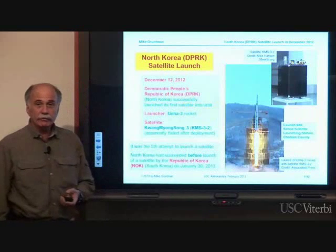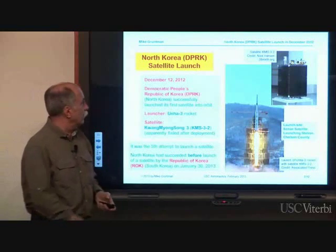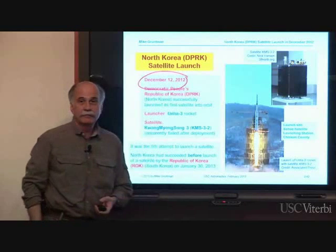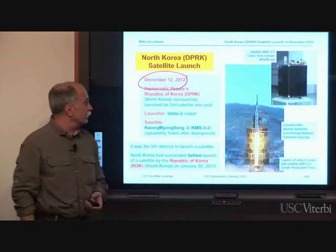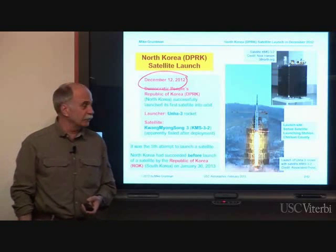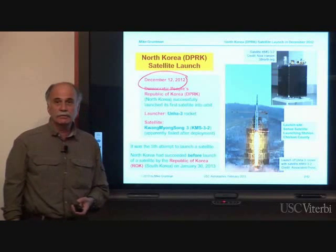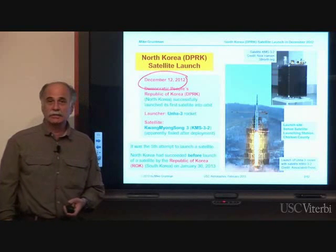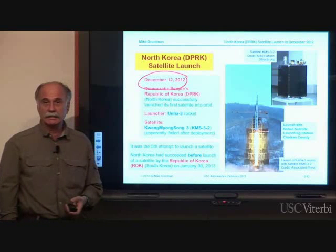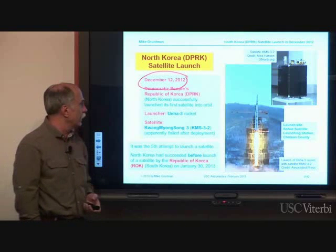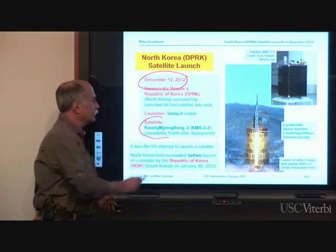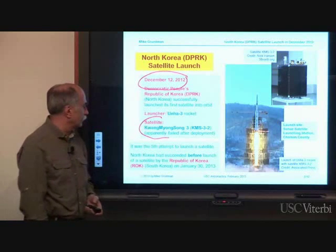As many of you know, two months ago, on December 12, 2012, North Korea successfully launched its first artificial satellite. They used a three-stage rocket launcher, UNHA-3 — UNHA stands for 'galaxy' in Korean — and they put a satellite, Kwang-myung-sung-3, into orbit.